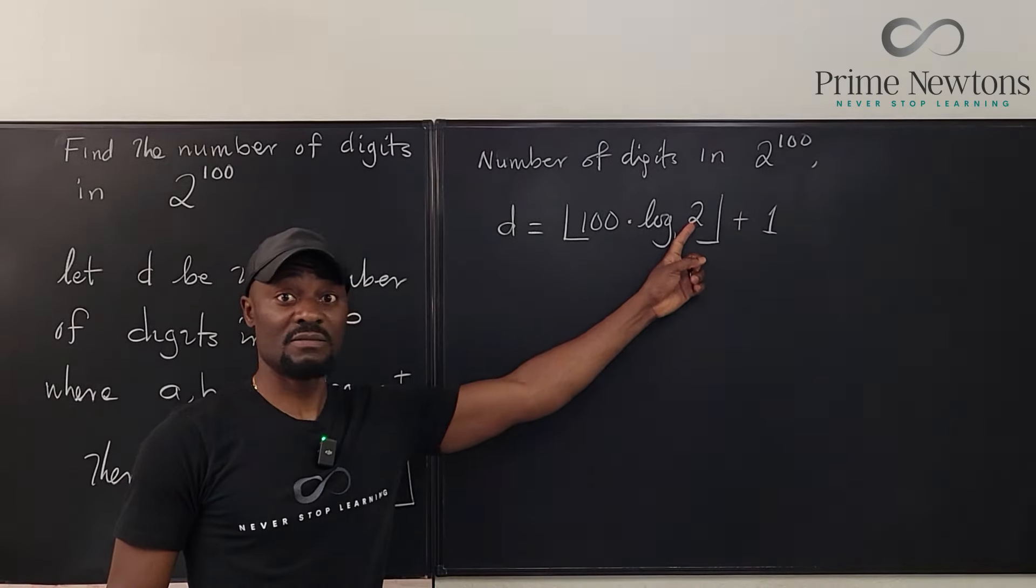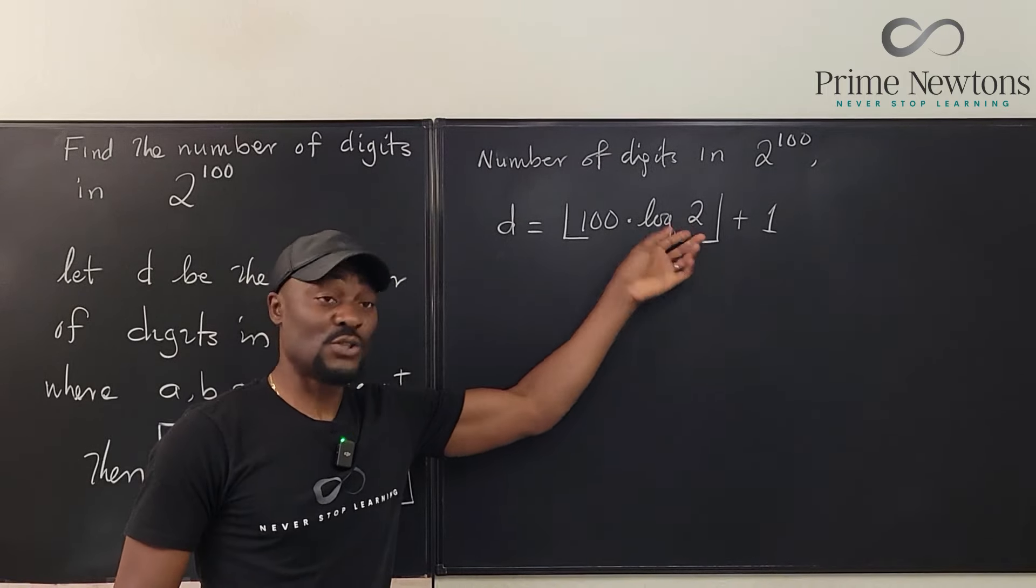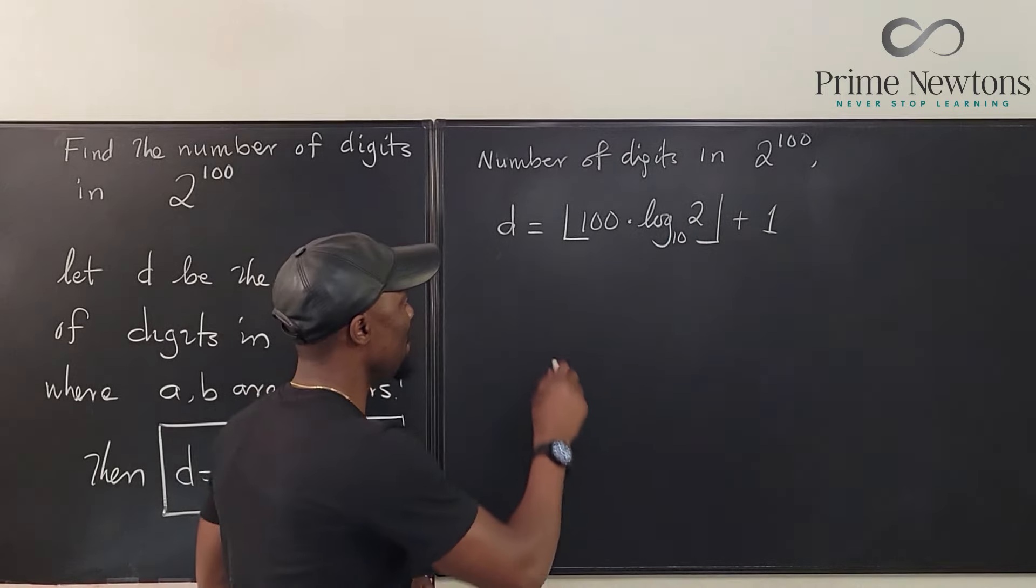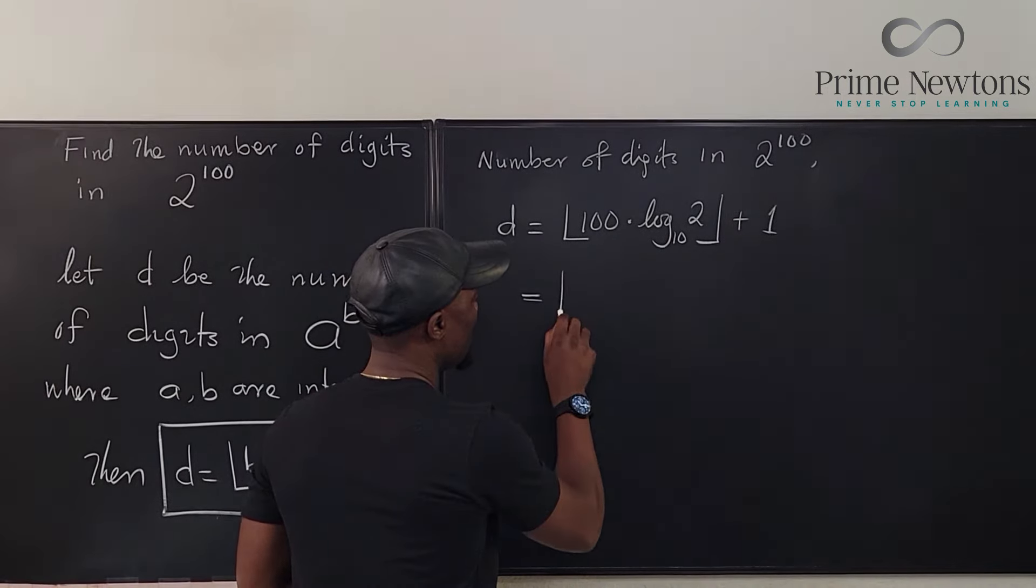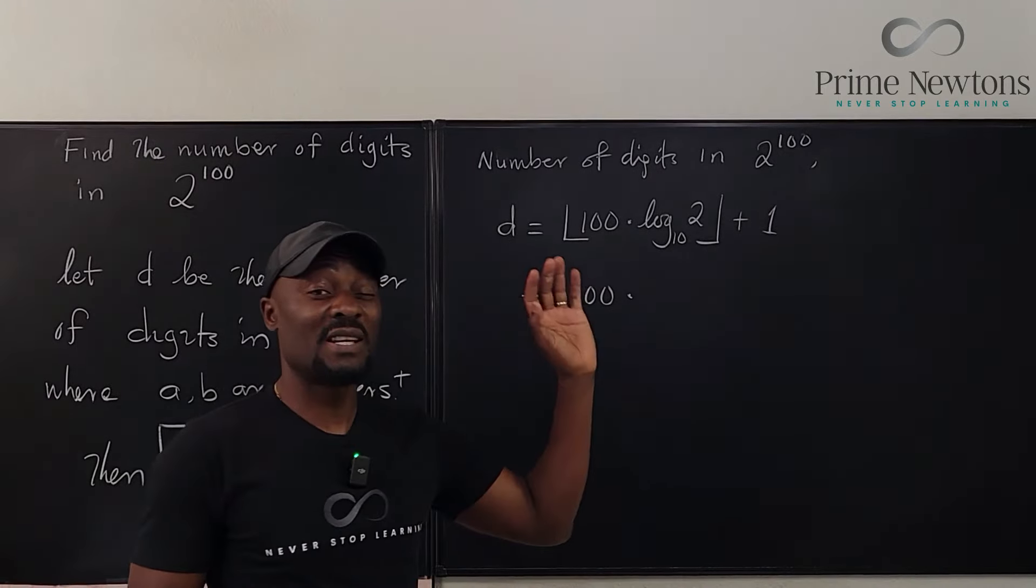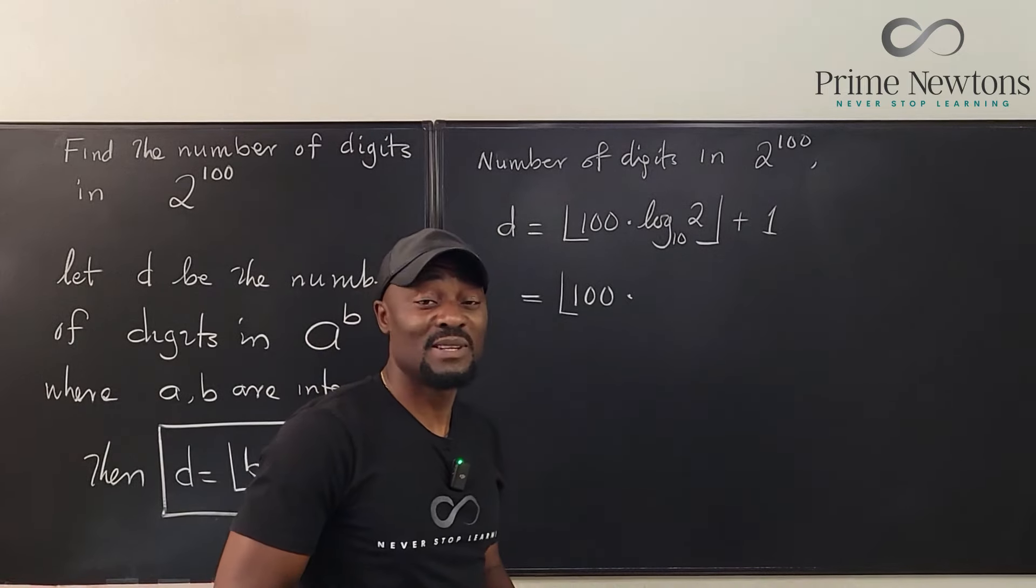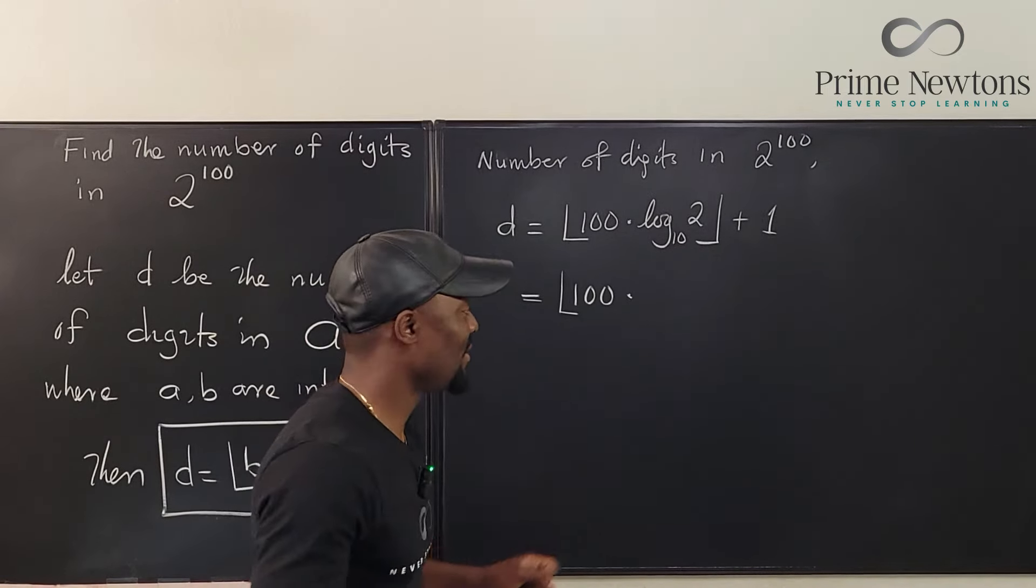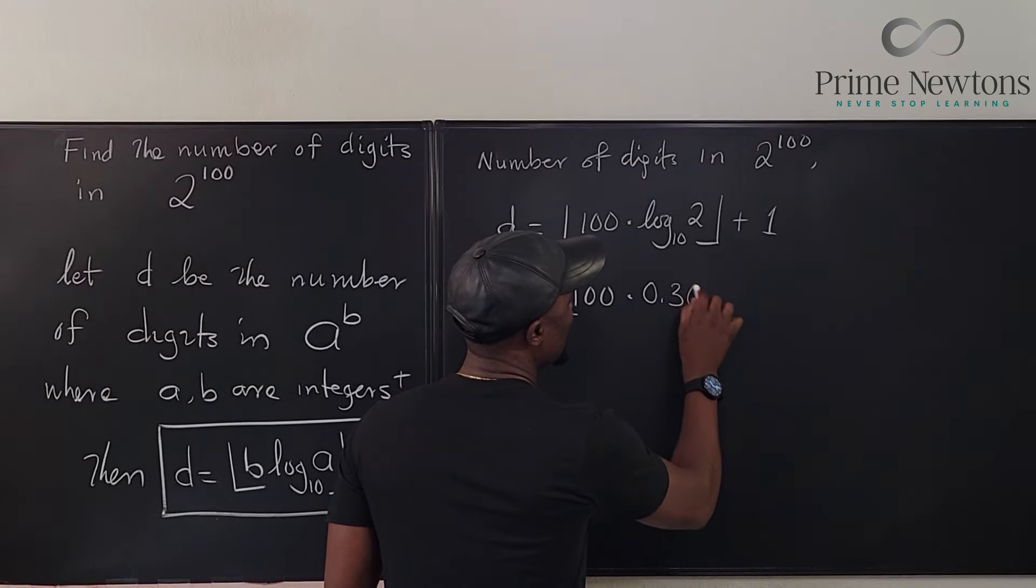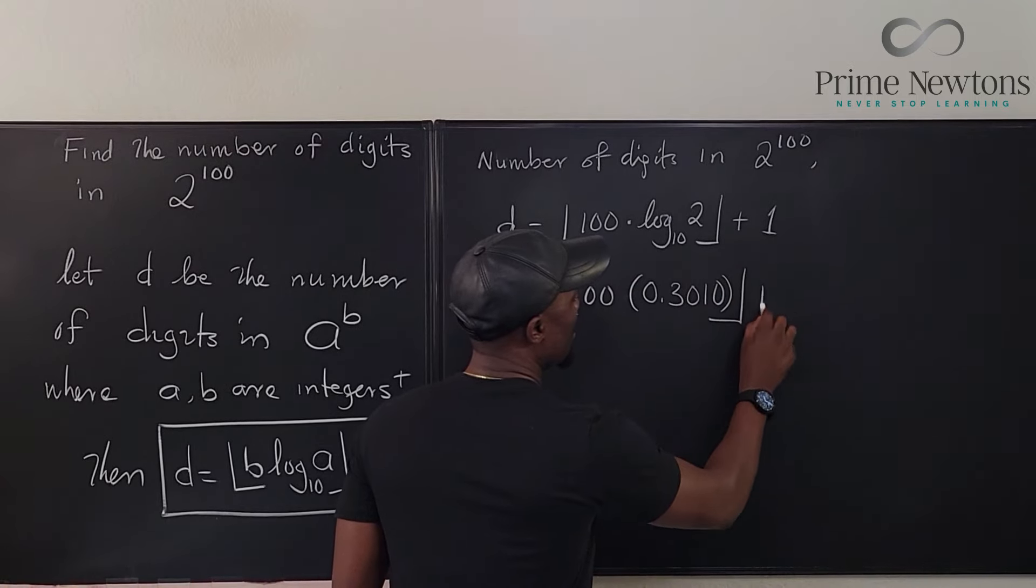So if you know log 2 base 10, not natural log, don't use natural log. Unless you want to convert it, and that's what you have memorized. This is going to be the floor of 100 times log base 2. I had that memorized in high school, and I still remember it's 3010. I was always saying I would never live to 3010. That's too far away. So it's going to be 0.3010. Let's make it multiplication plus 1.